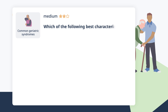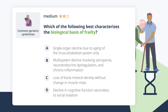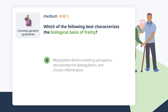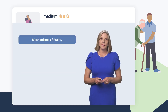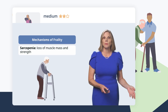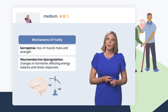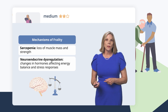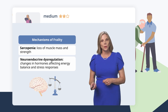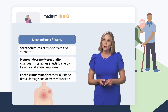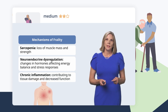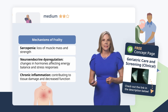Which of the following best characterizes the biological basis of frailty? The mechanisms underlying decline include sarcopenia — loss of muscle mass and strength — neuroendocrine dysregulation secondary to hormonal changes affecting energy balance and stress responses, and chronic inflammation contributing to tissue damage and decreased function.